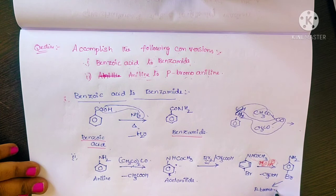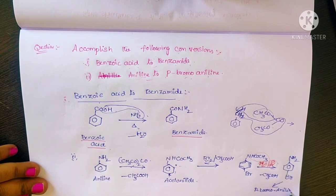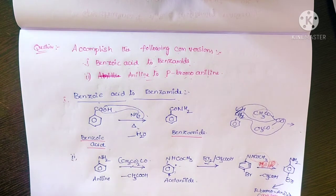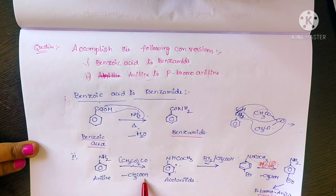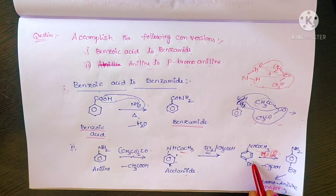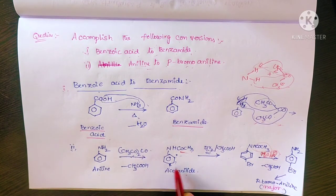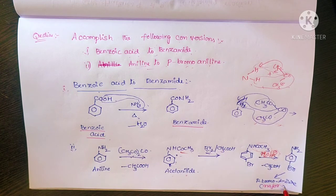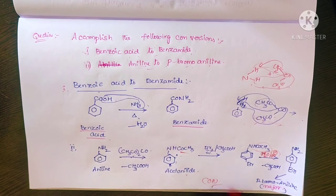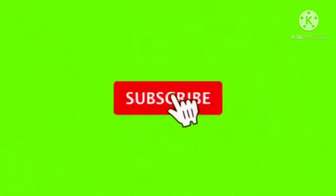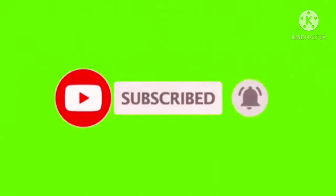Okay students, are you understood this? To recap: aniline reacts with acetic anhydride to form acetanilide. Acetanilide reacts with bromine in the presence of acetic acid — the bromine attaches to the para position due to high para-hydrogen reactivity — then hydrolysis gives para-bromoaniline as the major product. I hope you liked this video. Please like it and share it.